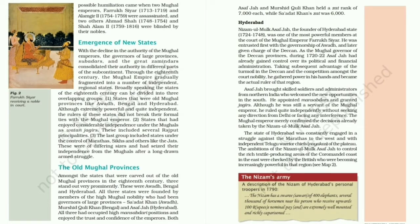With the decline of Mughal authority, the governors consolidated their power. Through the 18th century, the Mughal empire gradually divided into a number of independent regional states. Broadly, these independent states can be divided into three groups: first, states that were old Mughal provinces like Awadh, Hyderabad and Bengal; second, states that had enjoyed considerable independence under the Mughals as Vatan Jagirs, including several Rajput principalities; and third, states under the control of the Marathas, Sikhs and others like the Jats, who had seized their independence from the Mughals after a long drawn armed struggle.